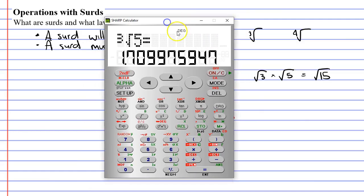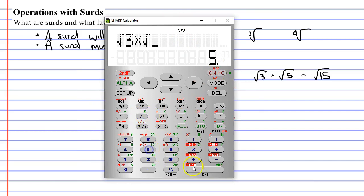In fact, we can check this using a calculator. The square root of three times the square root of five gives us this number 3.872, and it keeps going. So is this the same as the square root of 15? Let's check. Square root of 15, and we get the same number, 3.872, and so on.